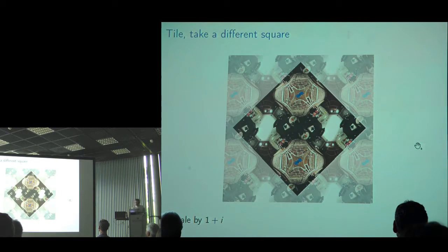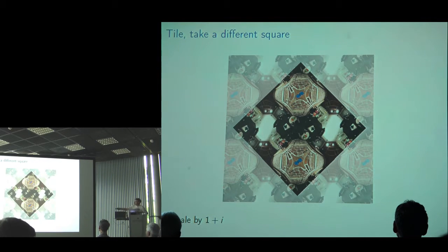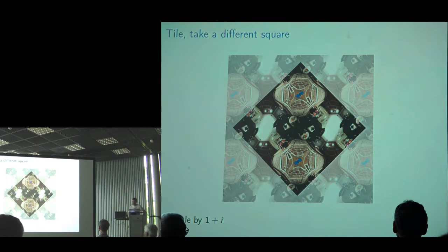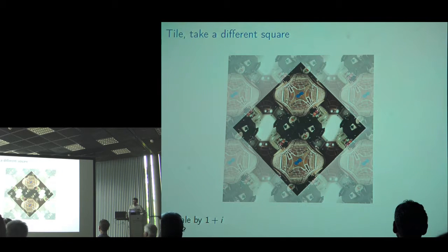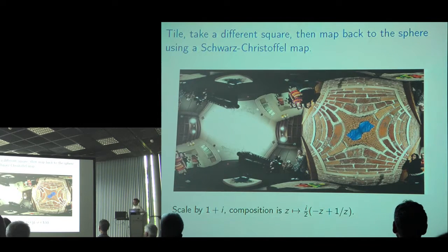Back to untwisting: I tile four copies of a square tile. If I scale up my picture by (1+i), I can take this square as the fundamental domain and get a new image. The inverse of the Weierstrass P-function uses the Schwarz-Christoffel map. So this is the composition of pullback by the Weierstrass P-function, scaling, and then pullback by the Schwarz-Christoffel map. For implementation, this is slow.